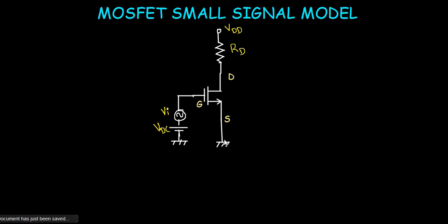Today we will discuss the small signal model of MOSFET. We can consider this simple circuit. In this circuit it is biased at a certain DC voltage such that its operating point is fixed in the saturation region. We are fixing the operating point in saturation region because we have to work this transistor as an amplifier, so we have to fix the operating point in saturation region.